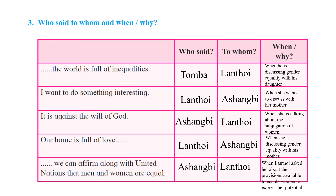Question number 3: Who said to whom and when or why? First, 'The world is full of inequality' — Thomba said to Lenthoy when discussing gender equality with his daughter. Second, 'I want to do something interesting' — Lenthoy to Ashangbi when she wants to discuss equality with her mother. Third, 'It is against the will of God' — Ashangbi said to Lenthoy when talking about the subjugation of women. Fourth, 'Our home is full of love' — Lenthoy said to Ashangbi when discussing gender equality. Fifth, 'We can affirm along with the United Nations that men and women are equal' — Ashangbi said to Lenthoy when Lenthoy asked about provisions available to enable women to express their potential.